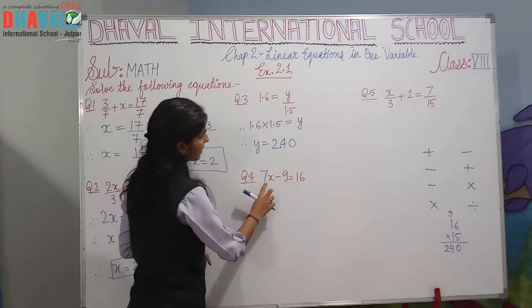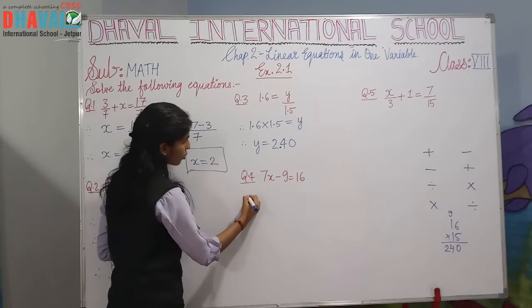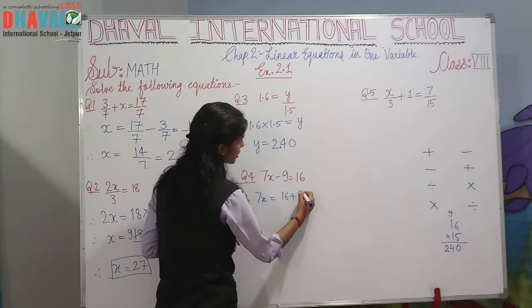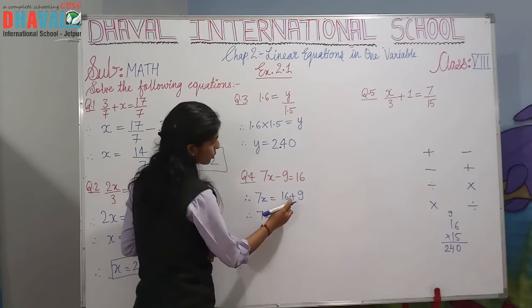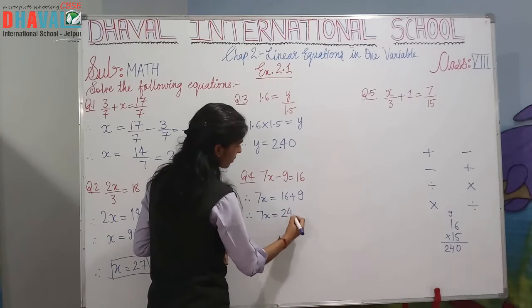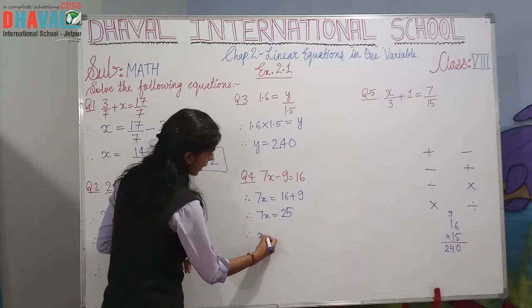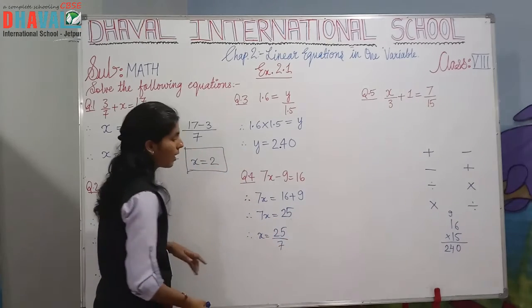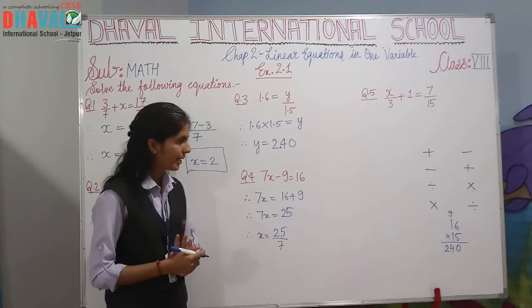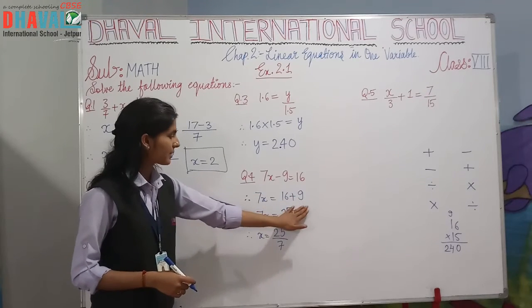The next equation involves 7x − 9 = 16. We bring the −9 to the other side, so 7x = 16 + 9 = 25. Then dividing both sides by 7, x = 25/7. This is the answer.